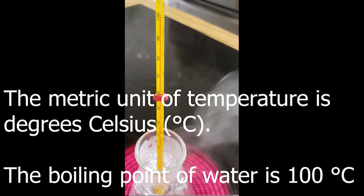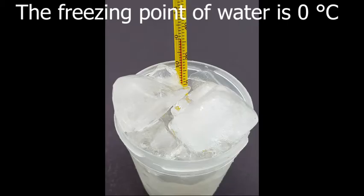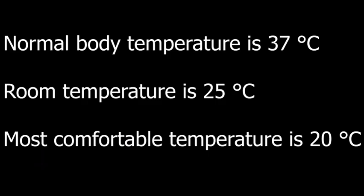Unit of temperature. The metric unit of temperature is degrees Celsius. The boiling point of water is 100 degrees Celsius. The freezing point of water is 0 degrees Celsius. Normal body temperature is 37 degrees Celsius. Room temperature is 25 degrees Celsius. Most comfortable temperature is 20 degrees Celsius.